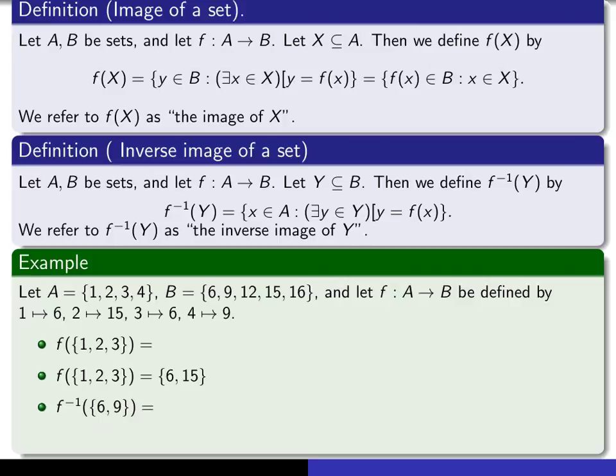So f of {1, 2, 3} is what? Well, f of 1 is 6, f of 2 is 15, and f of 3 is 6 again. So together we get 6 and 15, and so there is the image. It is {6, 15}. You'll notice it's a certain subset of the codomain.